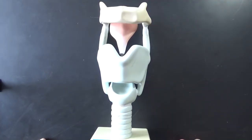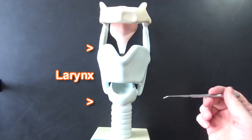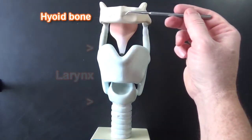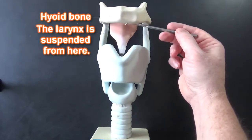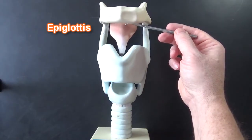What we're looking at here is the larynx. This is a model of the larynx. This is the hyoid bone right here. This structure right here is the epiglottis.